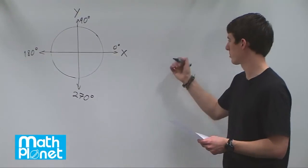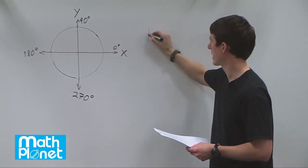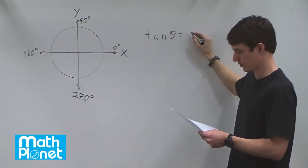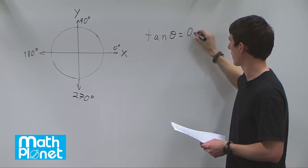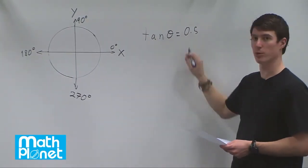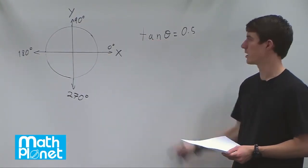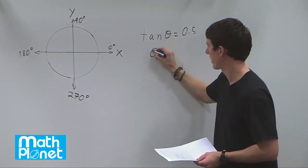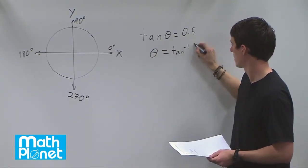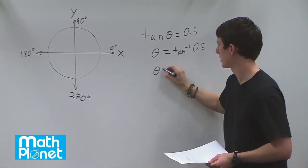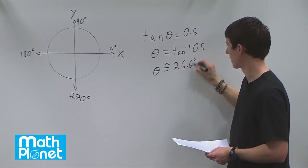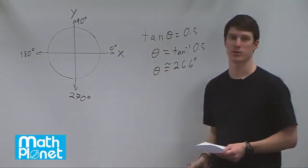In this problem, we want to find a simple angle given that tangent of theta equals 1/2, or 0.5. We can use our calculator to solve by taking the inverse tangent of both sides. The inverse tangent function gives us theta directly, so theta equals inverse tan of 0.5, which gives us theta approximately equal to 26.6 degrees — right about here on our unit circle.